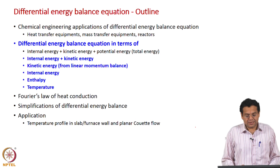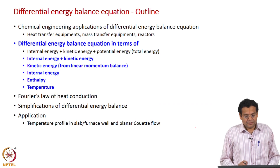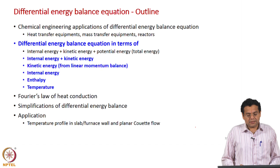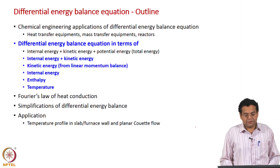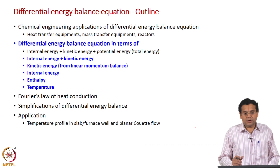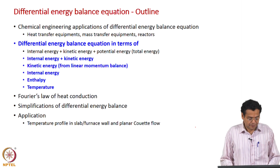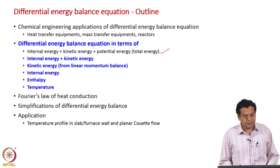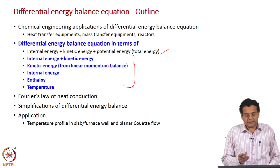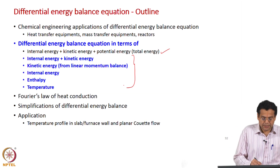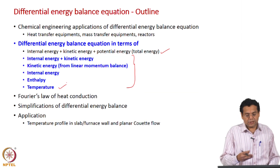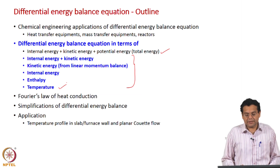We are deriving the differential energy balance equation. We started with the integral energy balance equation and obtained the differential energy balance equation in terms of total energy. We also looked at how to express the rate of heat and rate of work done terms in the energy balance equation. We now proceed to express the differential energy balance equation in other forms, and finally the objective is to express it in terms of temperature. We will be sequentially deriving the energy balance equation in terms of these variables.